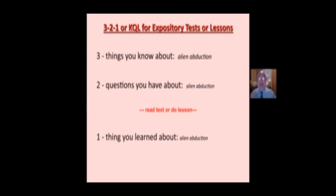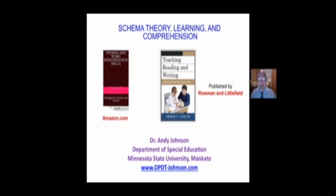All learning, all reading is about creating meaning. Here's a simple activity for expository text called 3-2-1, similar to KWL. Before reading or a lesson, identify three things you know about the topic. Then identify two questions you have about it. Read the text or do the lesson. Afterward, identify one thing you learned. In a large group, you can list those on the board. This activity provides structure. That's been some information on schema theory, learning, and comprehension.